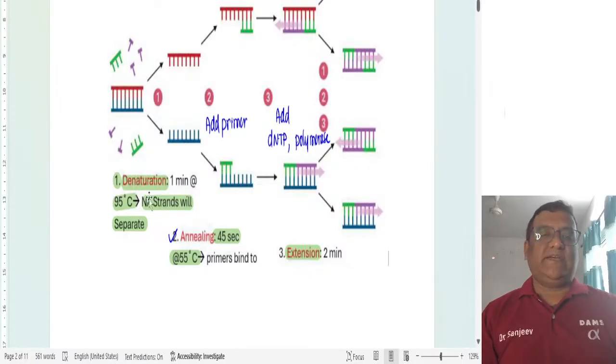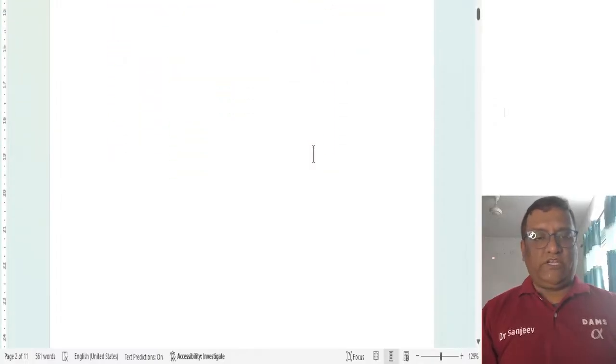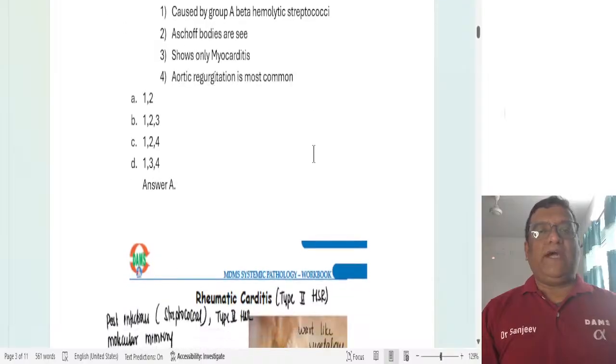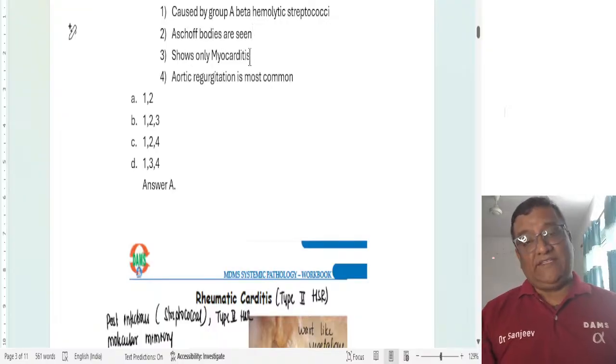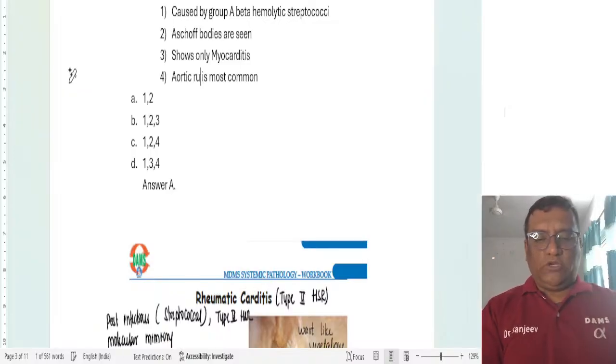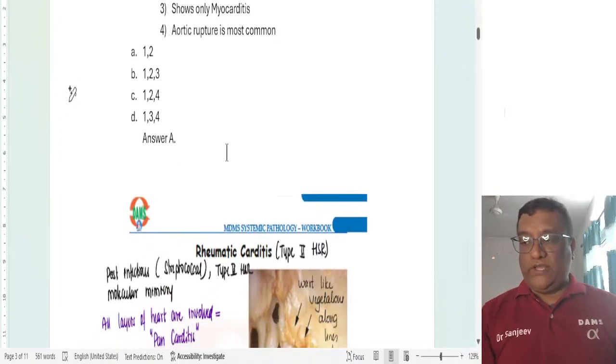Denaturation, separation of the strands is happening at 95 degrees. Then annealing where primers bind and extension will be where polymerase will start acting. Next question was true about rheumatic heart disease. This was a multiple true false type of question. Caused by group A beta hemolytic streptococci - yes, that is true. Aschoff bodies are seen - that is also true. Then shows only myocarditis - this will be false. We know that it causes pancarditis. Aortic regurgitation or aortic valve rupture is most common - no, that is false. Most commonly it will be mitral regurgitation. So one and two are true in this.